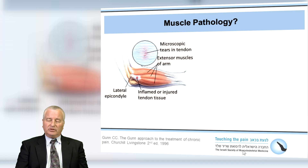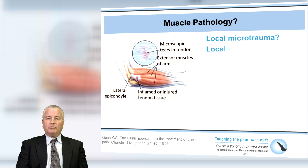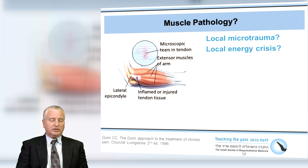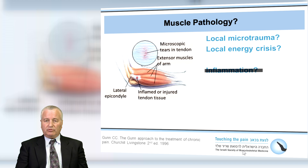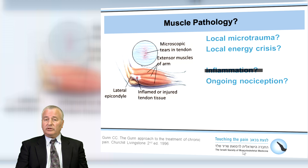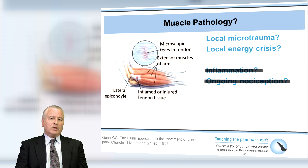We've seen in the previous lectures that muscle pathology may be caused by local microtrauma or perhaps local energy crisis. That's the prevailing theory with Travell and Simons and those that have followed them, who've stood on their shoulders because they've provided a very good basis. But what we have found along with them is that inflammation is not likely a cause for myofascial problems, and we don't have to look for redness and swelling to determine a cause of the patient's pain. Similarly, we can rule out ongoing nociception as a reason for the patient's musculoskeletal problem. So what otherwise could it be?